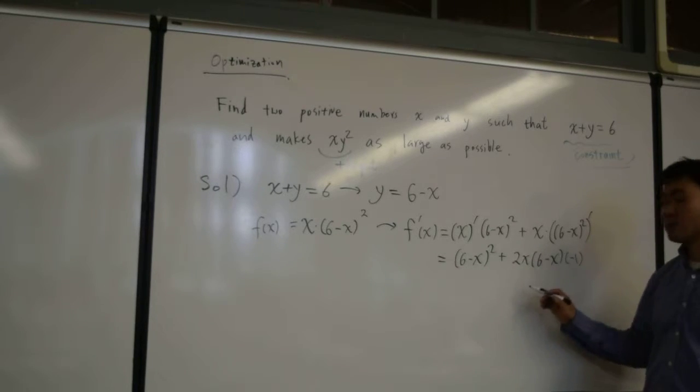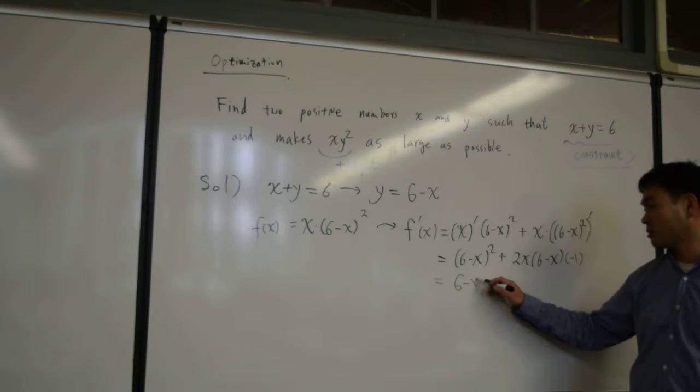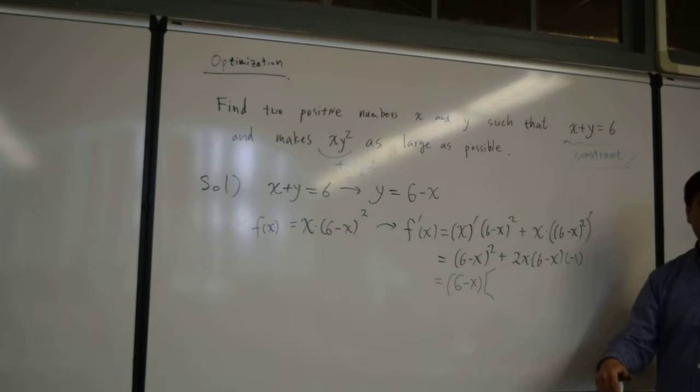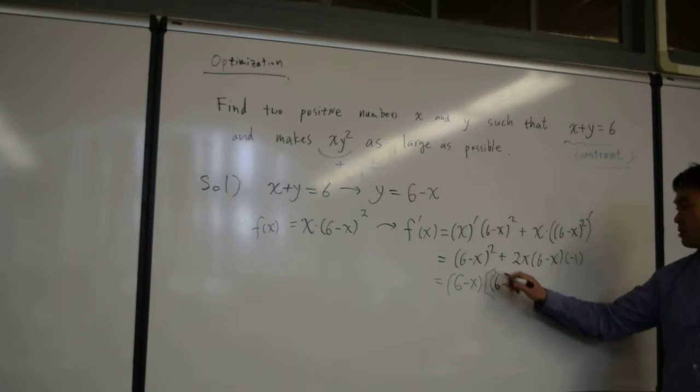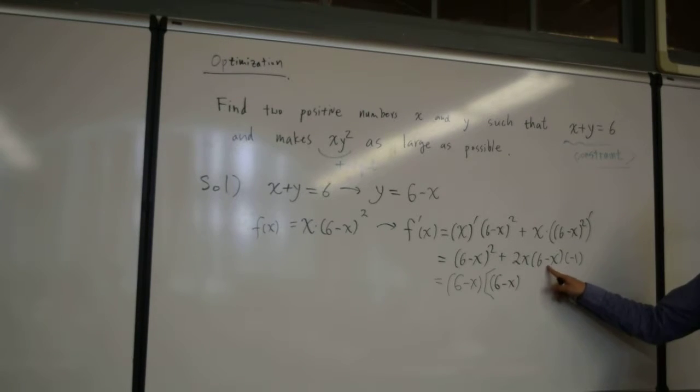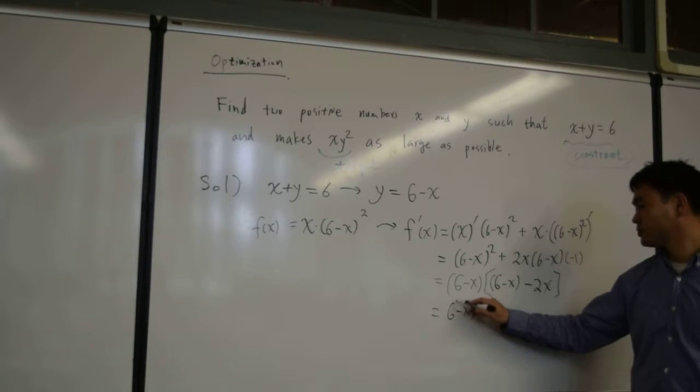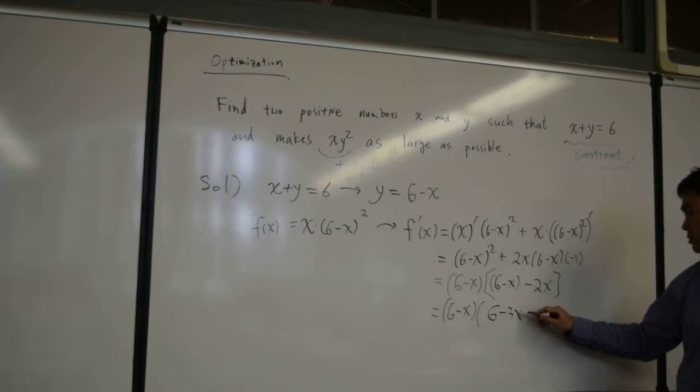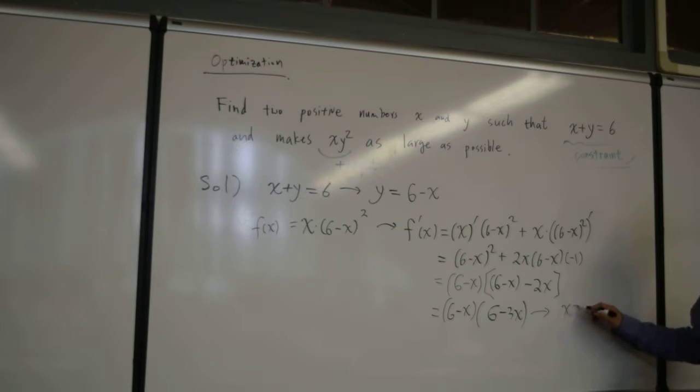Notice that they both contain 6 minus x as a common factor, so I'm going to factor the 6 minus x out. Let's see what you have left after factoring that out. Since this is 6 minus x times itself, if you take one of the 6 minus x out, 6 minus x is what's left inside from the first term. And if you take away 6 minus x, what's left is negative 1 times 2x, so it's negative 2x. Let's simplify. 6 minus 6 minus, these two are like terms, so you can combine, so it's 6 minus 2x. When is this equal to 0? That's equal to 0 when x is either 6, when this is 0, or when x is 2. So these are the critical values inside the domain.